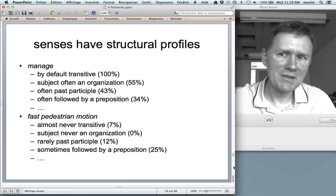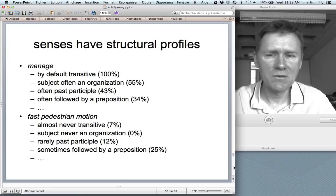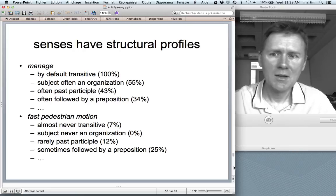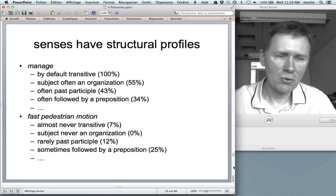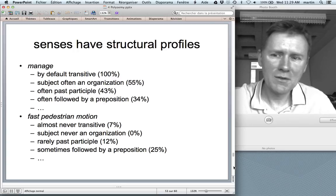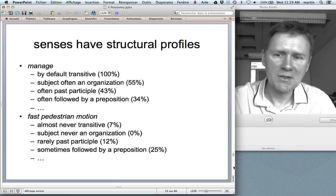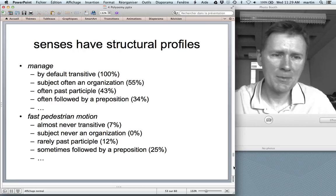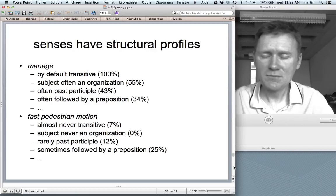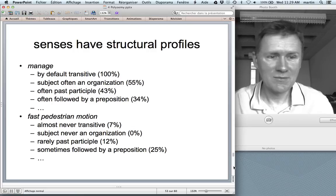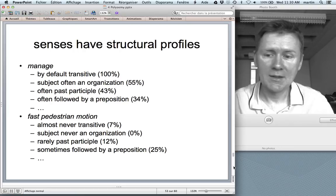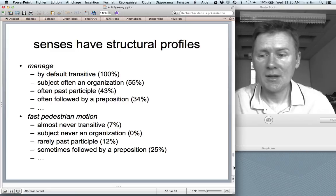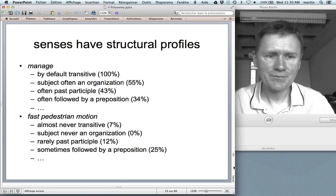The conclusion is that senses have structural profiles. The managed sense is by default transitive. So, all corpus examples that we find are transitive clauses. The subject is most often an organization. So, this program is run by the European Union. Often, it's in the past participle. So, this was run between 1995 and 1998. And often, it's followed by a preposition. So, run by the European Union. Contrast this with fast pedestrian motion. Normal physical running is almost never transitive. You run intransitively. The subject is never an organization. Rather, it's humans and animate beings. We find run rarely in the past participle when it's about motion. And we only sometimes find it followed by a preposition.